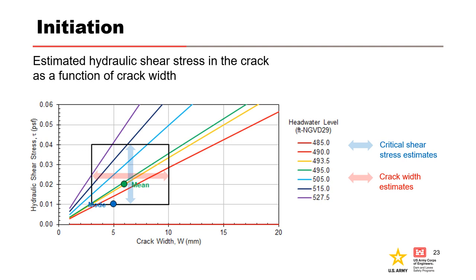The mean refers to the expected value of the critical shear stress and crack width based on the input distribution, and the mode refers to the most likely value or best estimate. From this figure, the reservoir level and crack width needed to exceed a given critical shear stress can be estimated. Initiation of erosion is assumed to occur when the critical shear stress is exceeded. For example, the hydraulic shear stress imposed by reservoir elevation 493.5, the purple line, exceeds the mean critical shear strength and mean crack width, shown by the green dot.